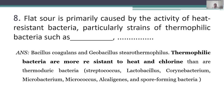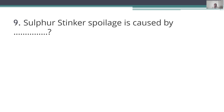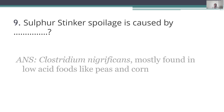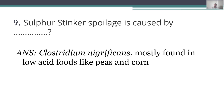Ninth question: what is sulfur stinker spoilage, and what is its causative agent? Sulfur stinker spoilage is caused by Clostridium nigrificans, mostly found in low acid foods like peas and corn.